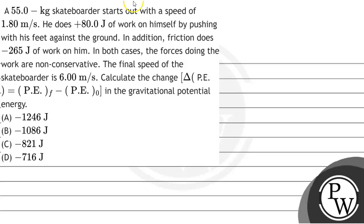Hello, Bacho. Let's see the question. A 55 kg skateboarder starts out with a speed of 1.80 meter per second. He does 80 joule of work on himself by pushing with his feet against the ground. In addition, friction does minus 265 joule work on him.